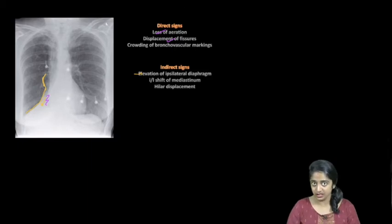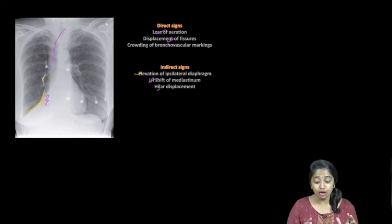I cannot clearly make it up in this case because the diaphragm is obscured here. And then ipsilateral shift of mediastinum, that is definite. Why? I've seen the trachea shifting to right side. Then I've got hilar displacement in the form of pulling down of descending pulmonary artery. So I've got most of this criteria satisfying right lower lobe collapse, collapse of the right lower lobe.